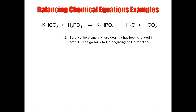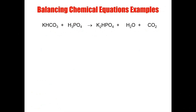Rule number two states: balance the elements whose quantity has been changed in step one. Because I didn't change anything with my phosphate ions or any of the other elements, I can move to the beginning of my reaction. At the beginning, I have one potassium on the reactant side and two potassium on my product side, so the fastest way to balance that is to add a two in front of my potassium. By adding that two, I've essentially changed the amount of hydrogen, carbon, and oxygen.